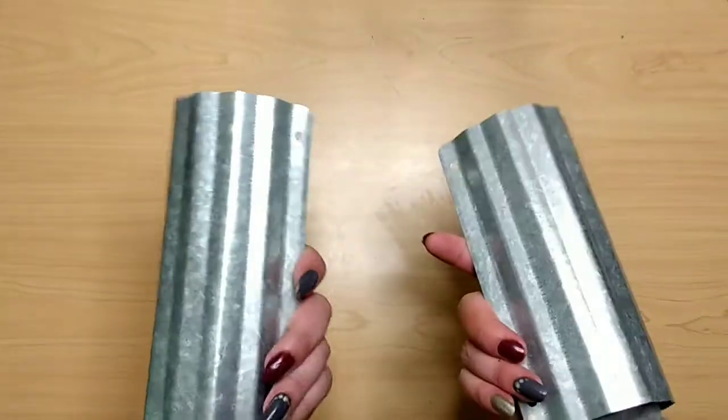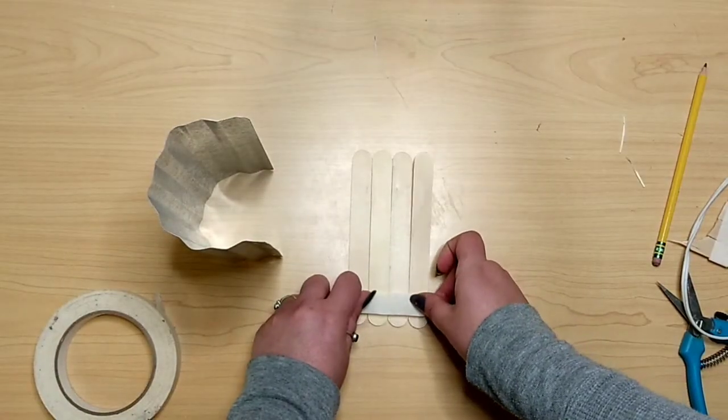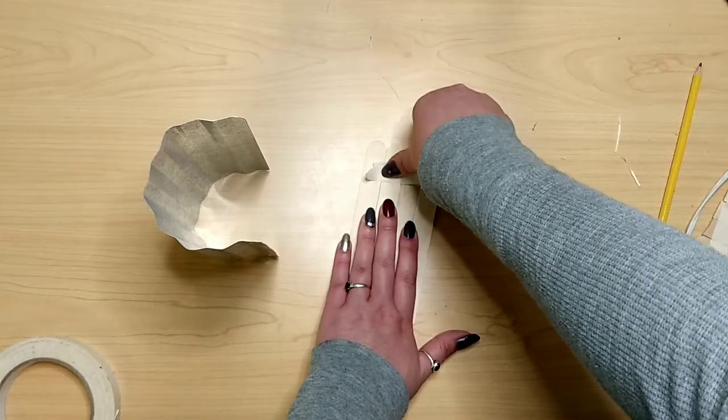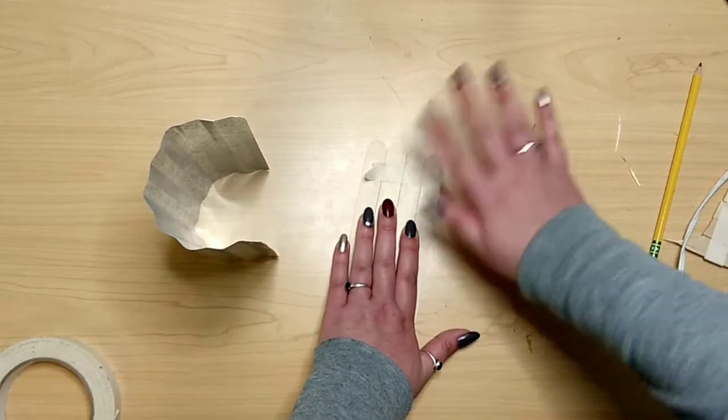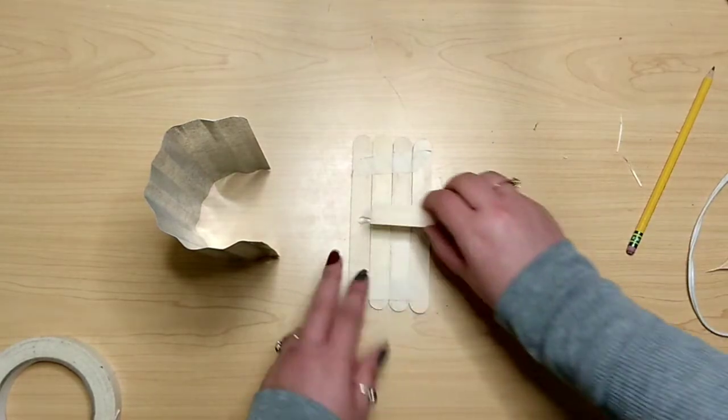Now we can create some little platforms to set inside of them and we're going to do that by taking four of those craft sticks. I'm using masking tape to keep it together at the ends. Then we're going to take a half of a craft stick and glue that right down the center.